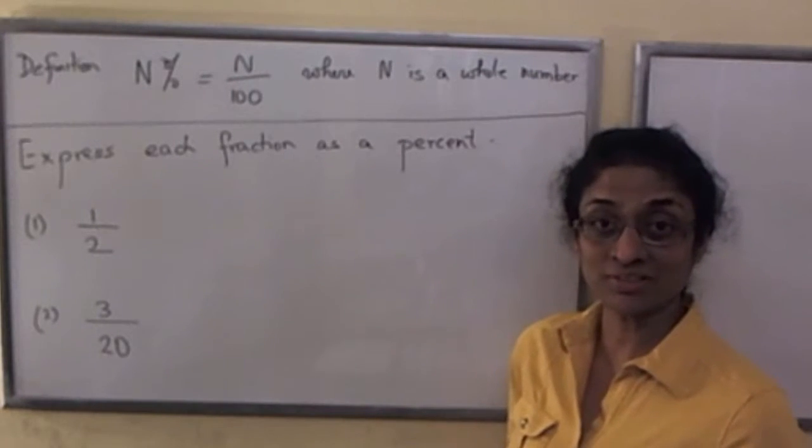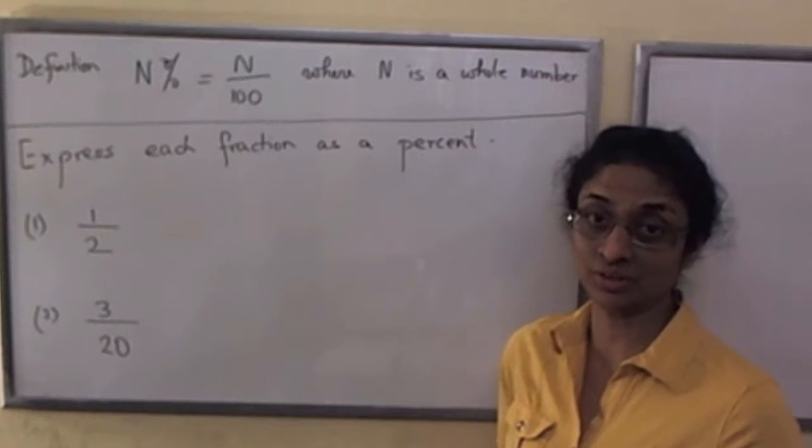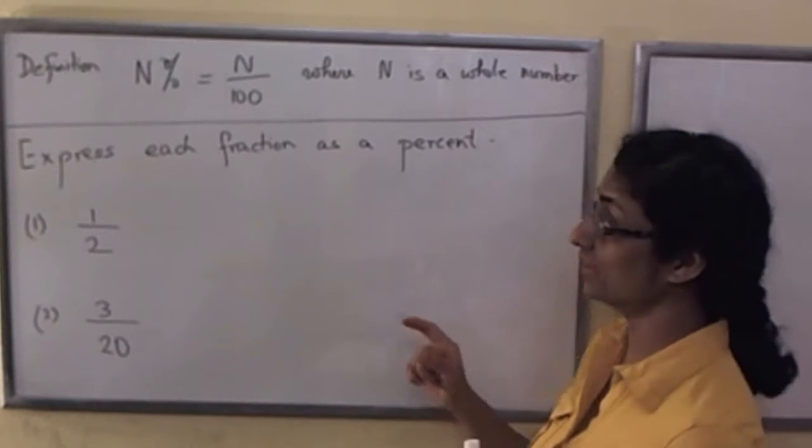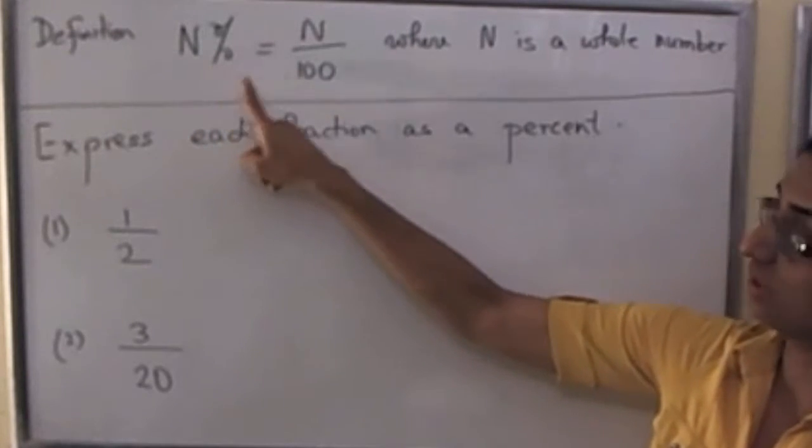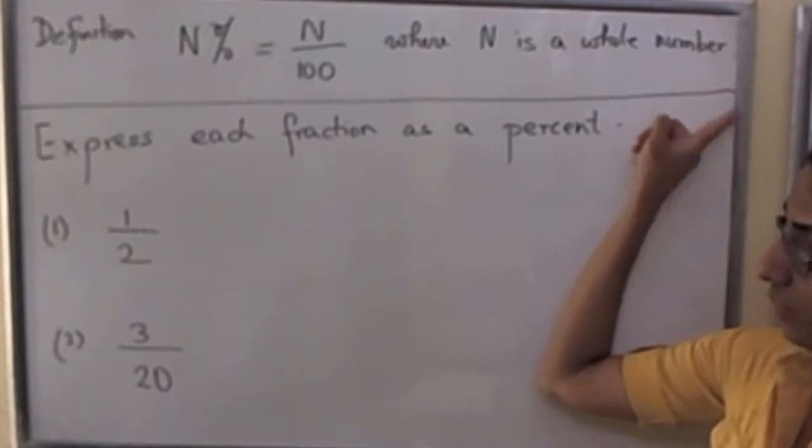Remember, the percent is simply a fraction with 100 in the denominator. More precisely, we said the definition of n percent is simply n over 100, where n is a whole number.